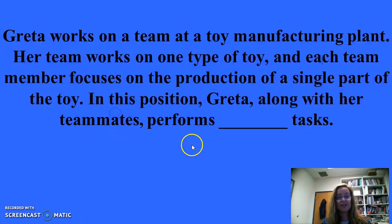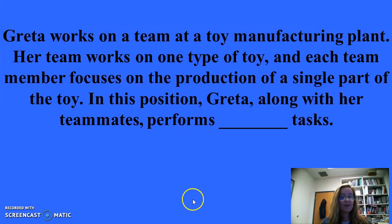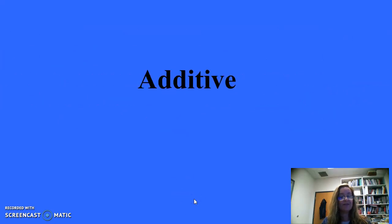For 200: Greta works on a team at a toy manufacturing plant. Her team works on one type of toy, and each team member focuses on the production of a single part of the toy. Greta, along with her teammates, performs additive tasks. Additive tasks are tasks in which each member of a group combines their efforts into a single group output.